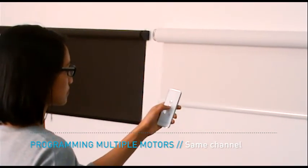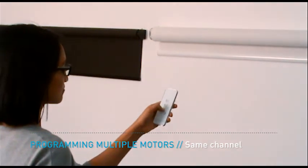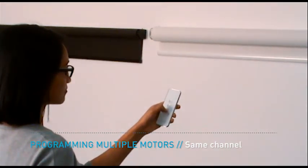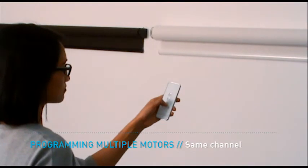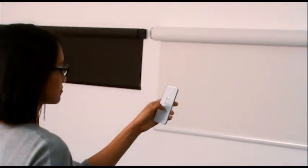The two motors are now programmed to the same channel and can be operated simultaneously. Repeat these steps to program additional motors on the same channel. The same steps can be applied when programming with a single or multi-channel remote.